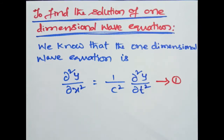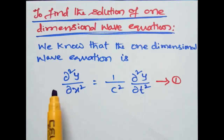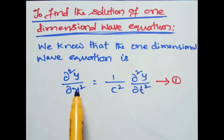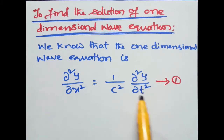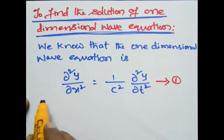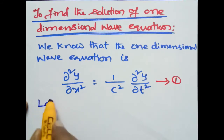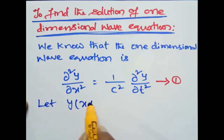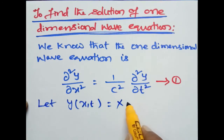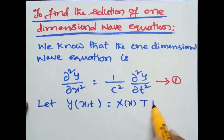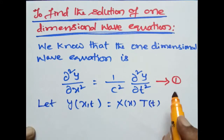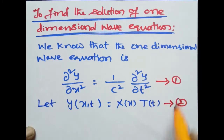Here y is the dependent variable, x and t are independent variables. As explained in the method of separation of variables, the trial solution of this equation is a product of two functions — one is a function of x alone and another is a function of t alone. Let y(x, t) = X(x) · T(t). Say this is equation number 2.